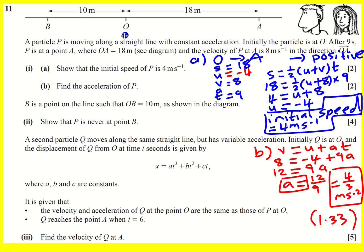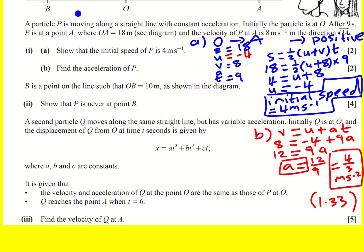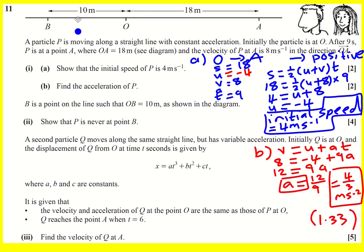We've got a lot of information on P now. It has an initial velocity of minus 4, so it's actually going to go left. The acceleration will mean it stops and then comes back, and after nine seconds it's got to A. Part two says we've also got point B, 10 meters away, and we need to show that P is never at point B — it never reaches it. I'm going to look at this by finding the maximum displacement it goes in this direction. Let me call this point X, where it stops, and show that X is less than 10 meters.